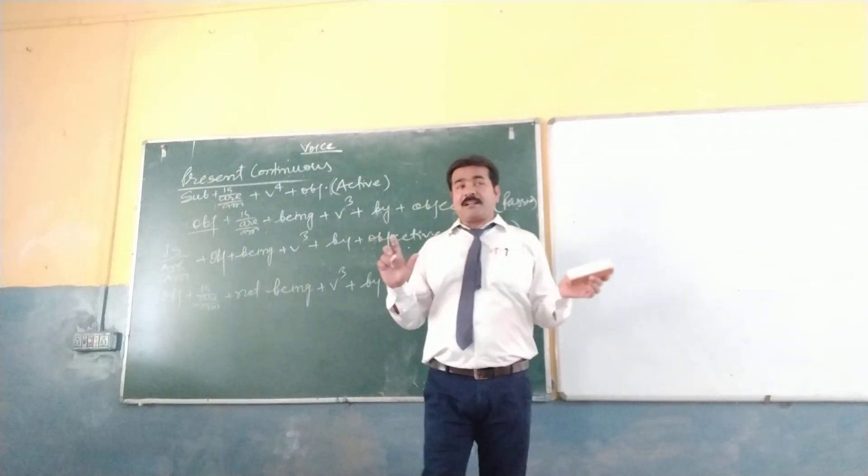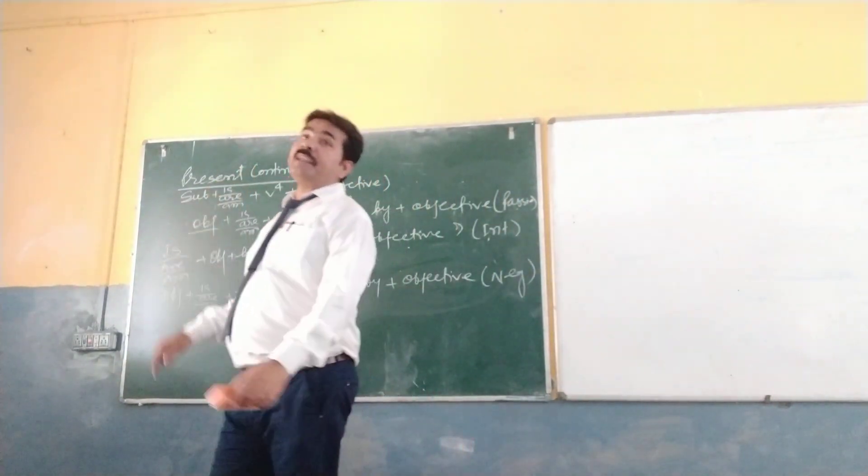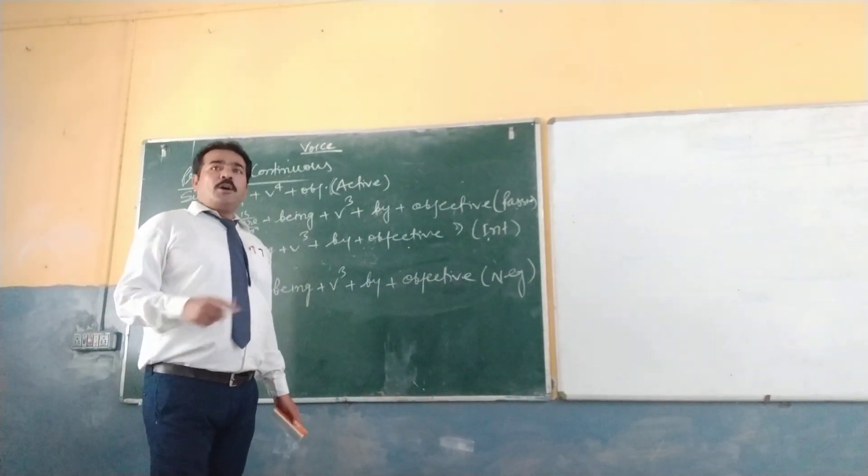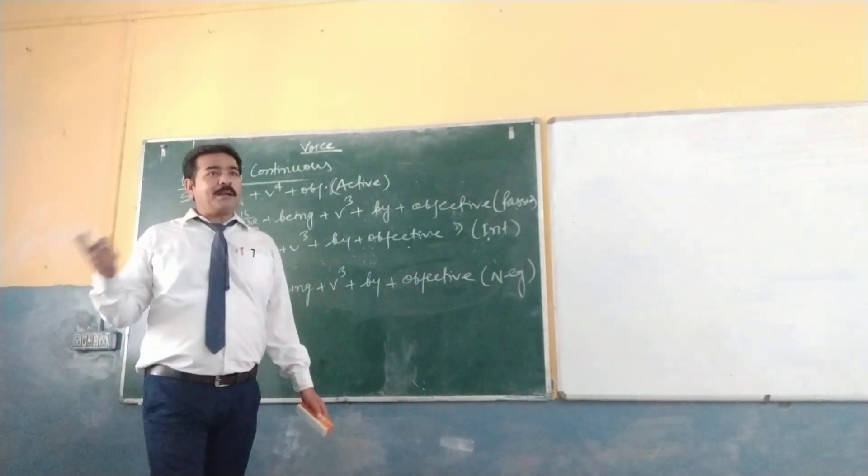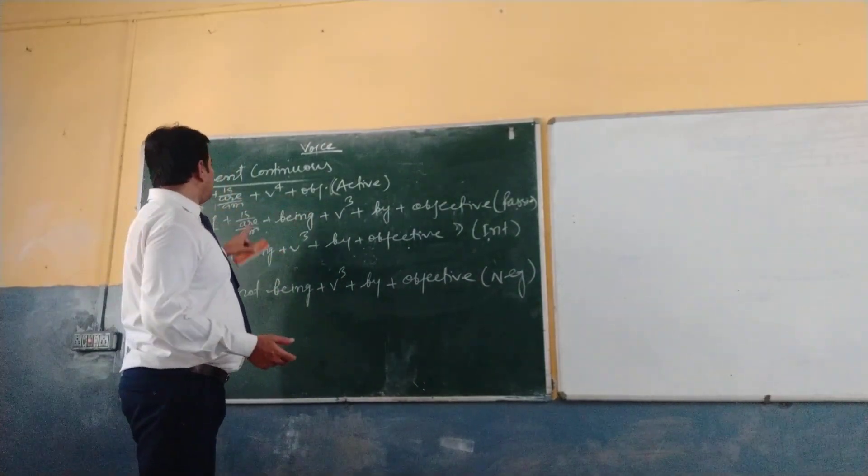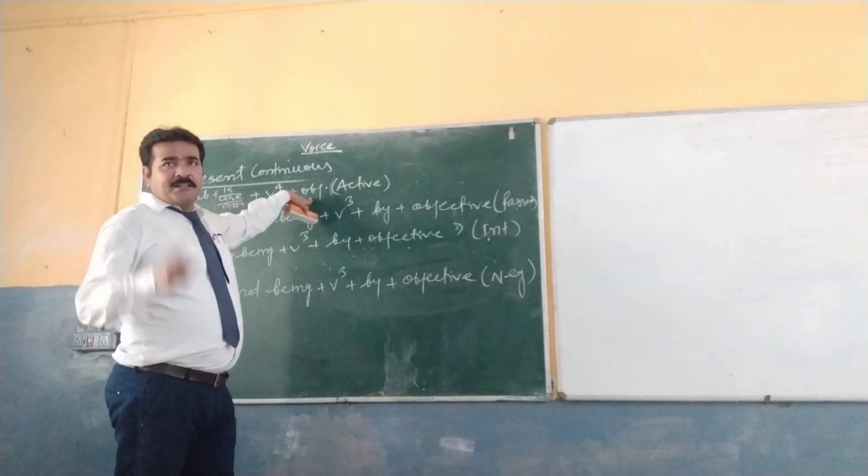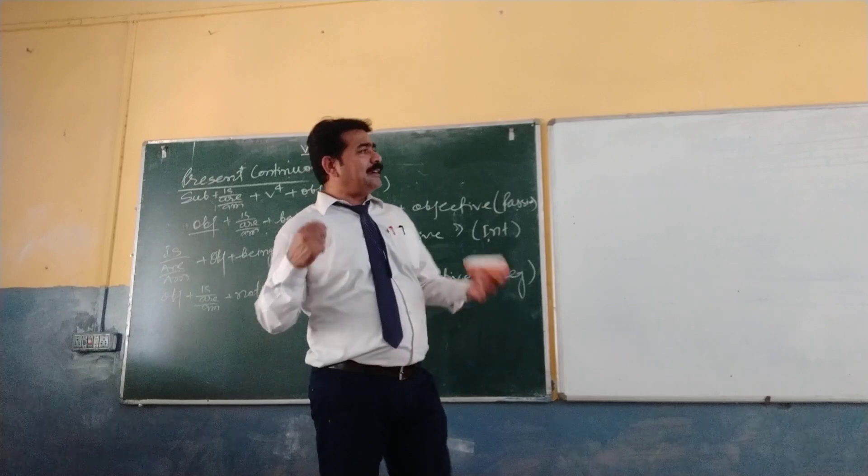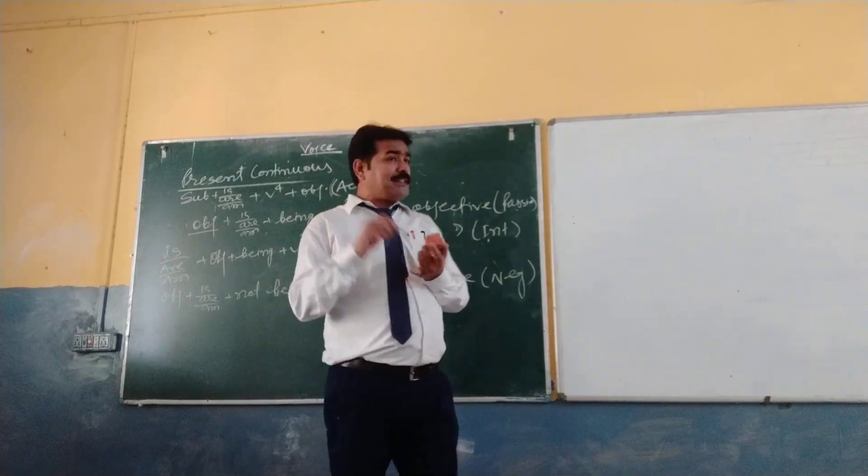And this is for interrogative. Another one: object plus is/am plus not plus being plus V3 plus by plus objective. This is for negative. So this is what present continuous. Continuous is being, B-E-I-N-G. Being and V3.